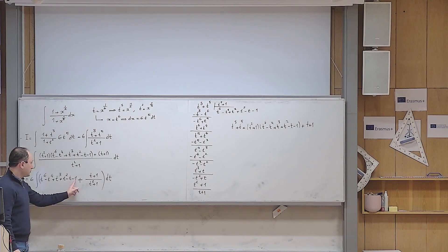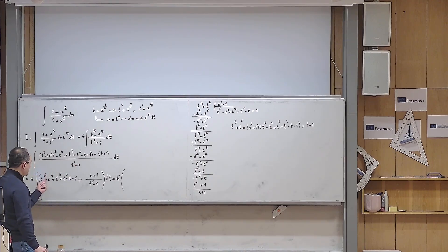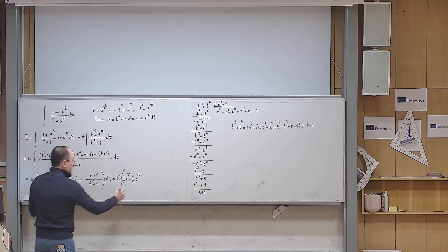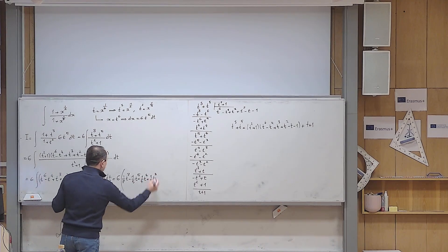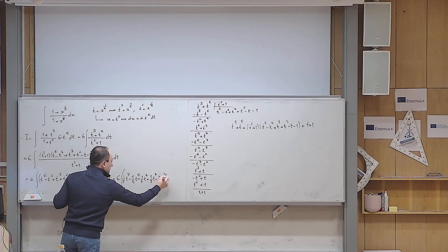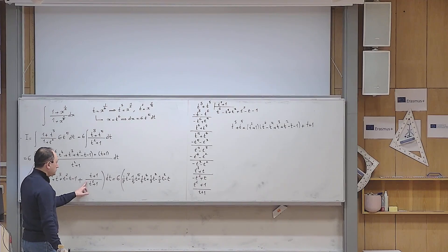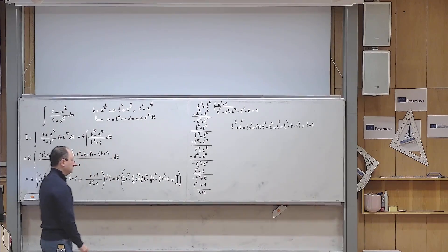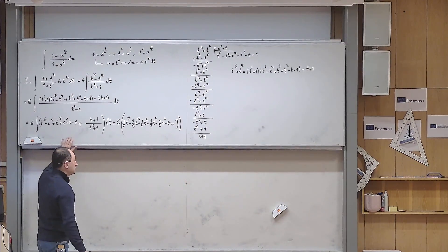All these integrals are more or less trivial, so let me do them in one go. This becomes 6 times: 1/7 t^7, minus 1/5 t^5, plus 1/4 t^4, plus 1/3 t^3, minus 1/2 t squared, minus t. And then the last integral — the integral of (t plus 1) over (t squared plus 1) dt — I will call it J. So in order to calculate my full integral, I just need to calculate J.